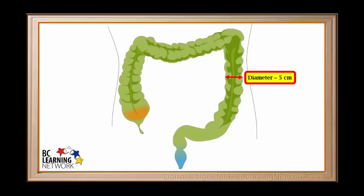It has an average diameter of about 5 cm. This is wider than the small intestine, which has an average diameter of about 2.5 to 3 cm. It is called the large intestine because of its larger diameter.